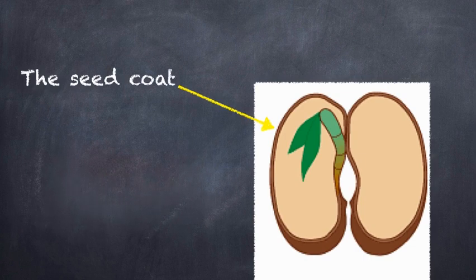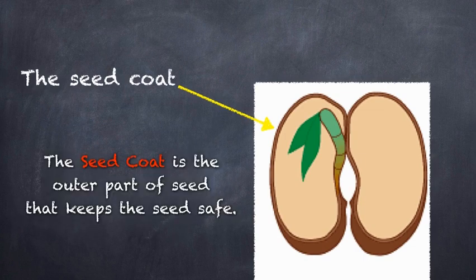The seed coat is the outer part of the seed that keeps the seed safe. It's really like our skin that keeps our bodies safe.